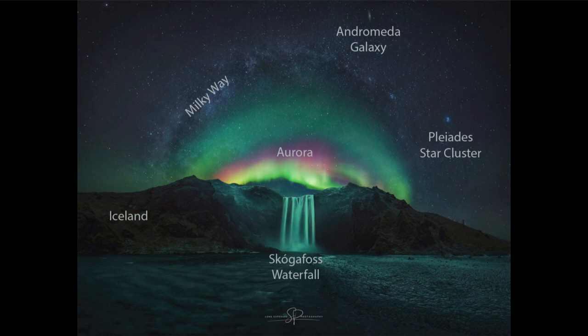Going back to the Andromeda galaxy, we should note that this is the most distant object that can be seen with the unaided eye. So if you know where to look for this, you can actually see a small fuzzy patch in the sky that is the Andromeda galaxy, about two and a half million light years away.